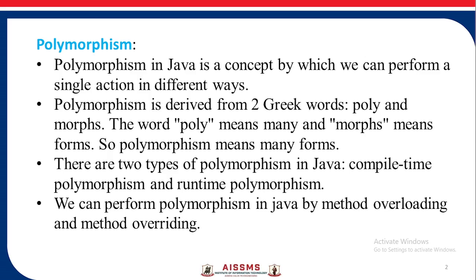Polymorphism in Java is a concept by which we can perform a single action in different ways. Polymorphism is derived from two Greek words, poly and morphs. The word poly means many and morphs means forms. So polymorphism means many forms.